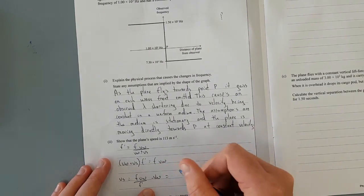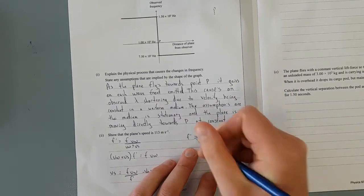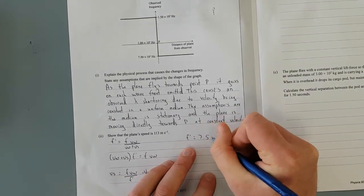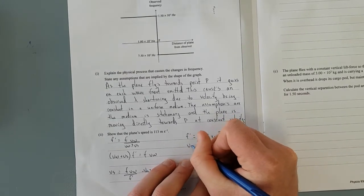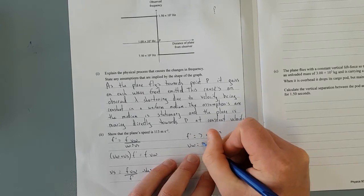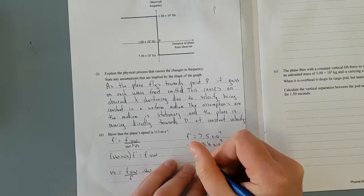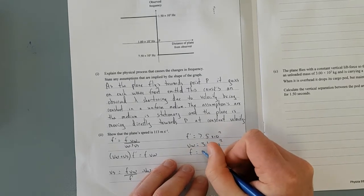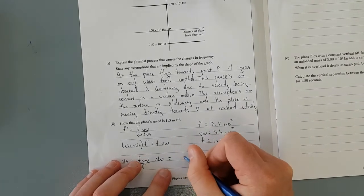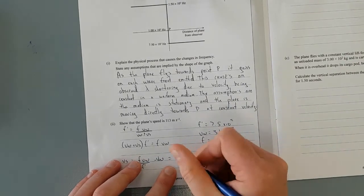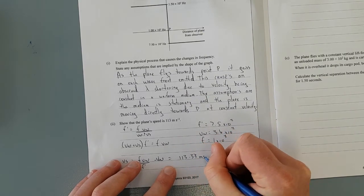And that is equal to... What have we got? F dash is equal to 7.5 times 10 to the 2. Vw, it's just the speed of sound, 3.4 times 10 to the 2. That's 340 metres per second. And the observed frequency is 1,000 hertz. So 1 times 10 to the 3. And that'll give us equal to... If you plug all this in it should give you 113.33 metres per second.